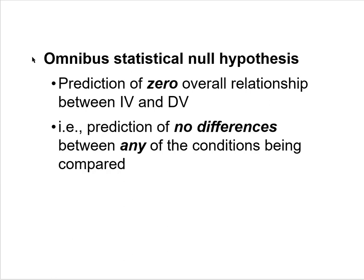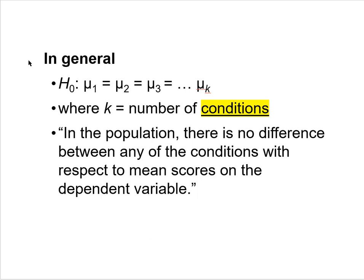When we perform ANOVA, there are different kinds of null hypotheses. The omnibus statistical null hypothesis is the prediction of zero overall relationship between the independent variable and dependent variable — in other words, a prediction of no differences between any of the conditions being compared. This is the omnibus null hypothesis that this lecture will focus on.